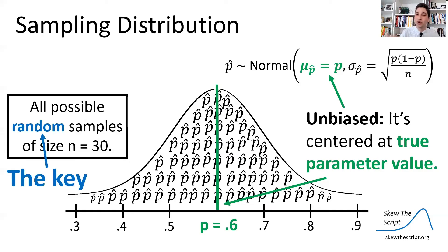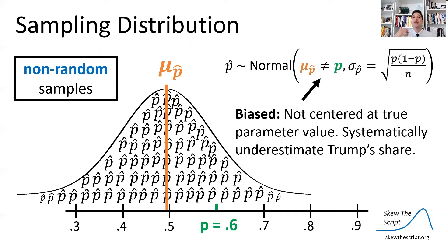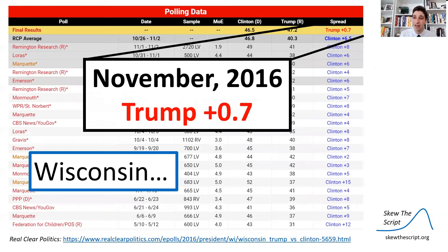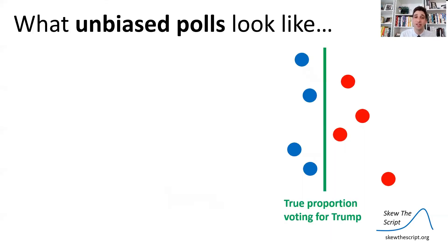If our polls center at the true parameter value, we say our polling method is unbiased. The key to ensuring it's unbiased is getting random samples from the whole population of voters. If we get non-random samples or samples that exclude certain parts of the population, we might end up with biased polls — systematically under- or over-predicting the true share who would vote for Trump. And this is exactly what we saw in Wisconsin: consistently, poll after poll, there was underestimation of Trump's popularity.